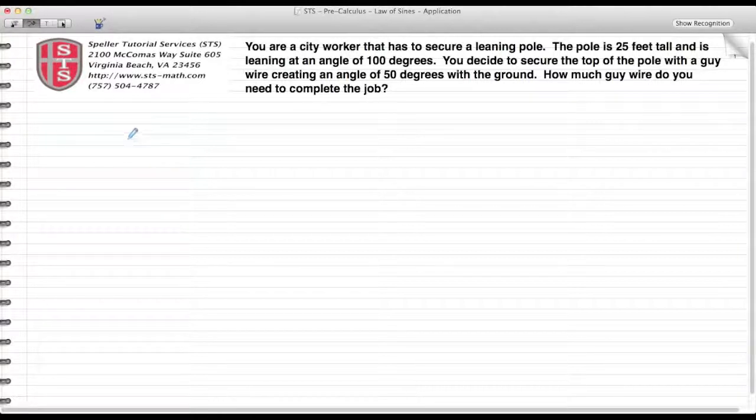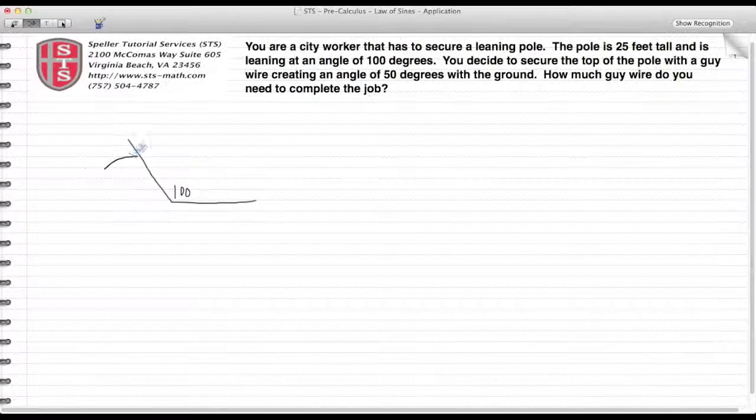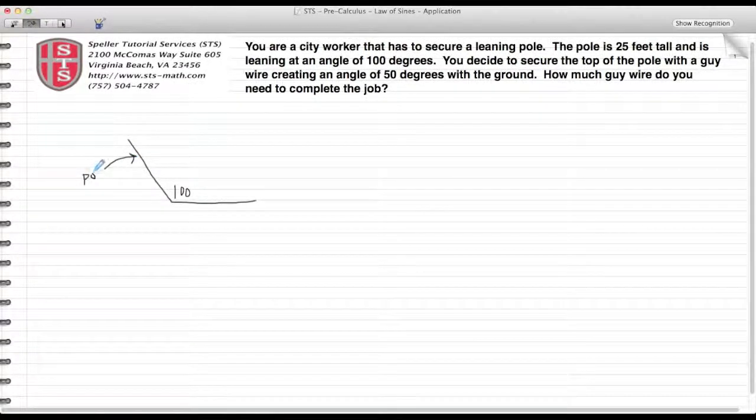...that's leaning at 100 degrees. So let's draw a pole - this is the 100 degrees and we'll say this here is our pole. It tells us that the pole is 25 feet and we're going to secure a guy wire...